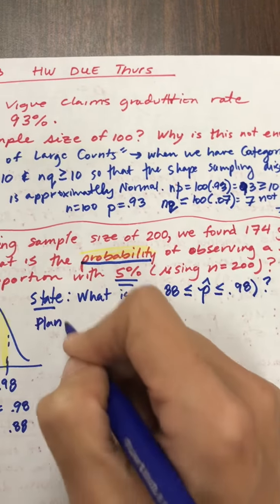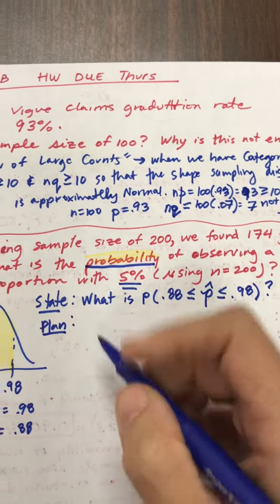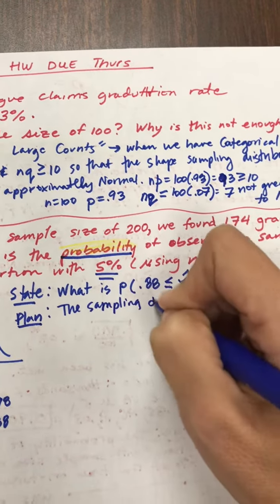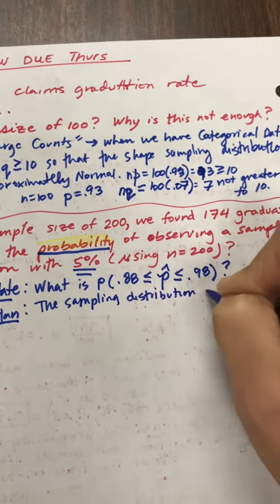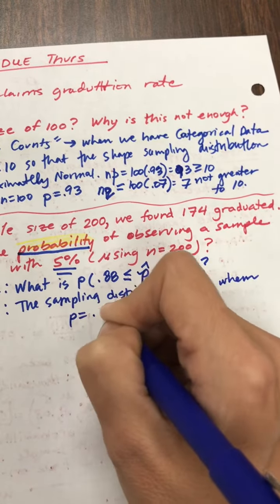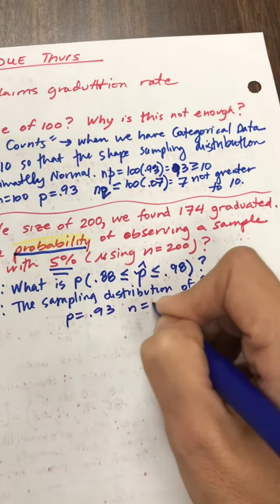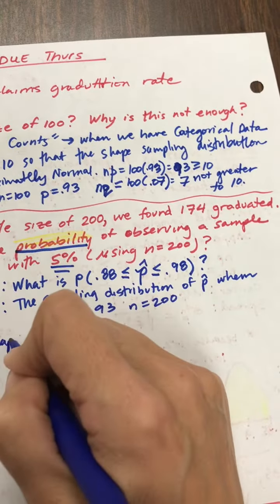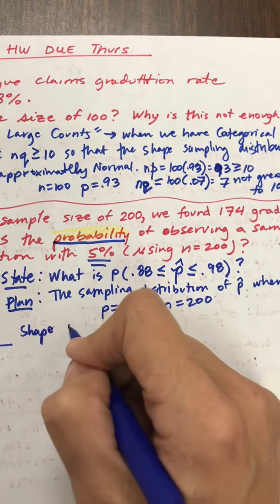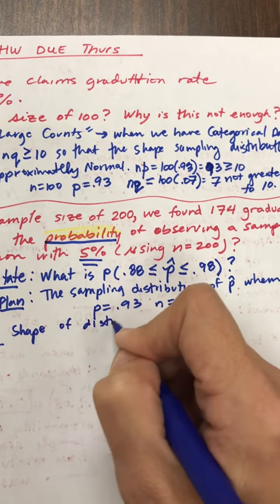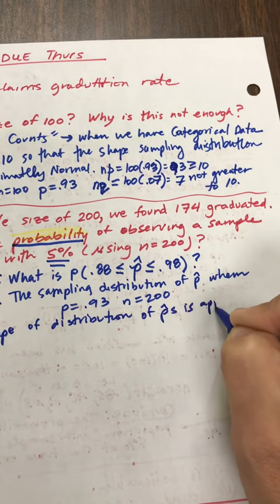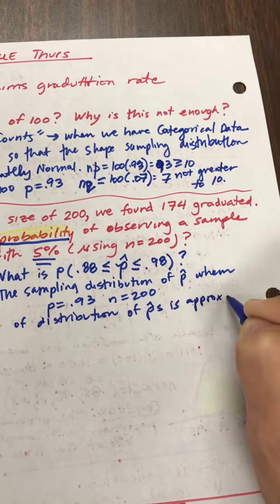So I go to my plan. My plan is I know that the sampling distribution of P hat, when my P is 0.93 and my N is 200, the shape, excuse me, hopefully you can see that, the shape of the distribution of the P hats should be approximately normal as long as certain conditions are met.